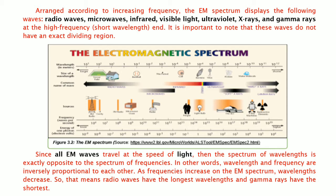Since all EM waves travel at the speed of light, then the spectrum of wavelengths is exactly opposite to the spectrum of frequencies. In other words, wavelength and frequency are inversely proportional to each other. As frequencies increase of the EM spectrum, wavelengths decrease. That means radio waves have the longest wavelengths and gamma rays have the shortest.